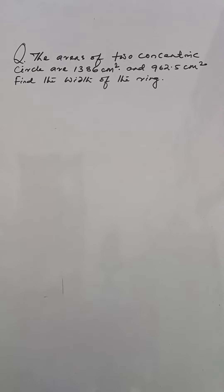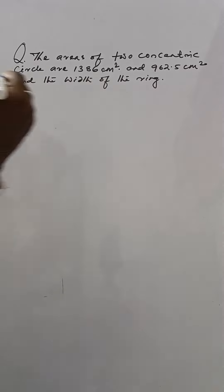The areas of two concentric circles are 1386 cm² and 962.5 cm². Find the width of the ring. In first case,